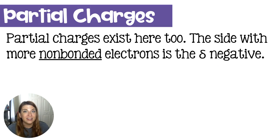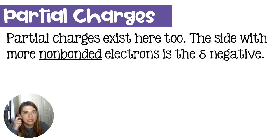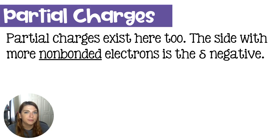Anytime we have non-bonded electrons in our Lewis structure — they're just dots — that side typically is going to be the side that is more negative, because there are already a bunch of electrons hanging out there, even outside of the tug of war.